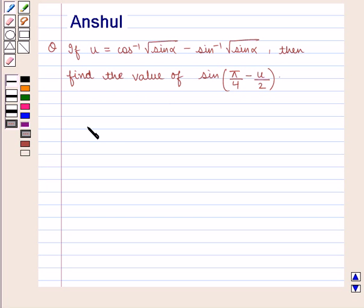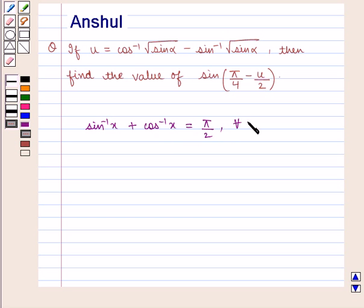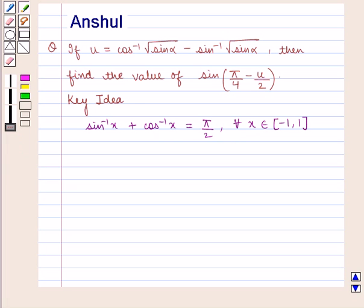The key idea we will use is that sin inverse of x plus cos inverse of x is equal to pi by 2, for all x belonging to the closed interval minus 1 to 1. With this key idea, let us proceed with the solution.